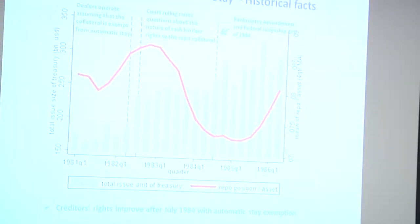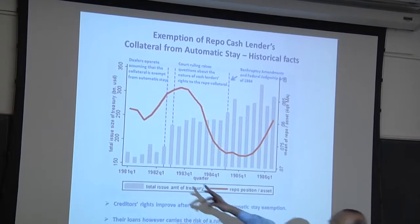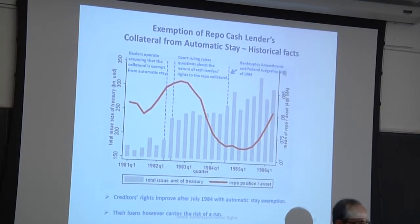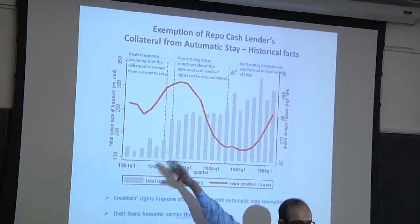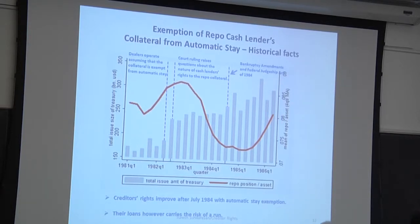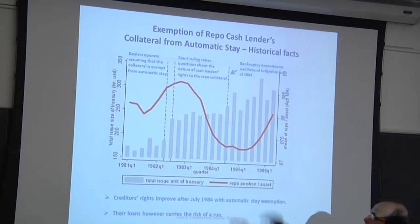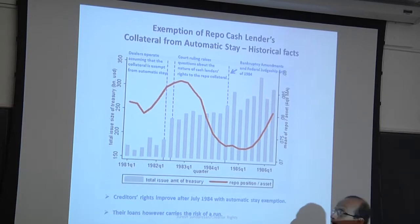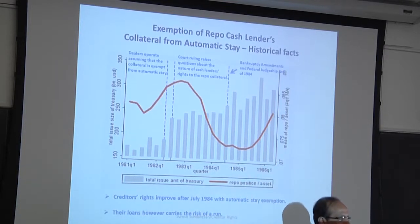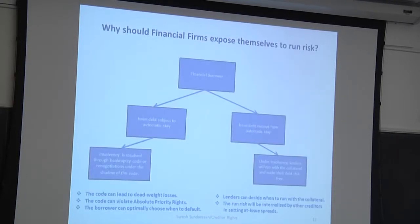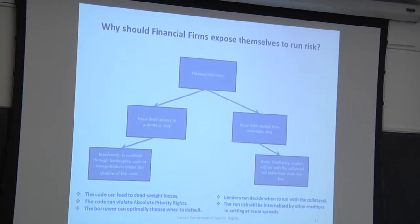This chart shows what was going on. Between 1981 and those two dashed vertical lines — referring to the Drysdale and Lombard-Wall bankruptcies — dealers were operating on the belief that their collateral belonged to them when they lent cash. Then the ruling came against that assumption, and there was a dramatic drop in repo cash lending. After Volcker successfully lobbied Congress to pass the 1984 law, there was a dramatic pickup in repo cash lending.